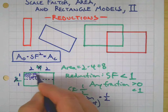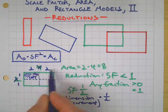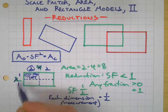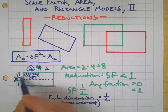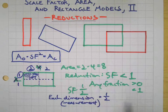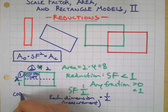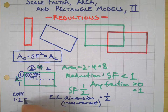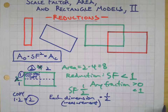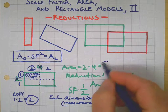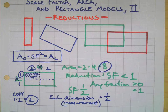Here's our copy, because it's half of our original in one direction and half of our original in the other. So the area of the copy is just one times two, which is two. Let's compare that to the area of the original.